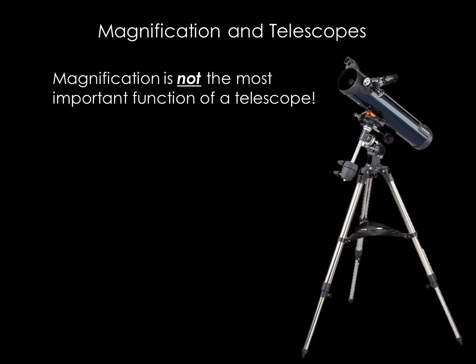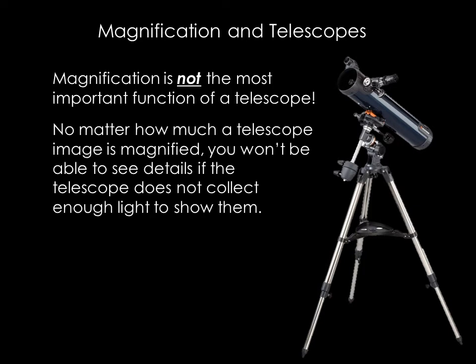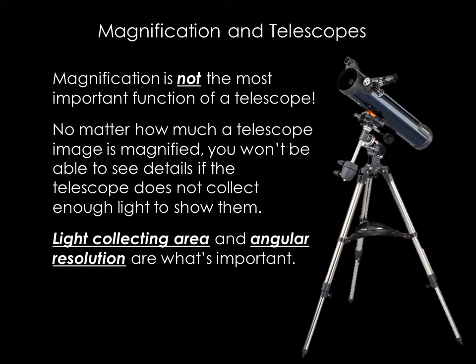The larger the telescope mirror or lens, the more photons you can collect. This potentially allows you to magnify the image more. No matter how much a telescope image is magnified, you won't be able to see the details if the telescope does not collect enough light to show them. Light collecting area and angular resolution are what's important.